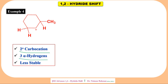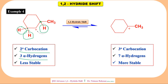Example four: this is a secondary carbocation with three alpha hydrogens — one alpha carbon has two hydrogens and the other has one. It is less stable. Hydride may be shifted from either alpha carbon, but always remember: shift from the carbon that gives the more stable carbocation. After the hydride shift we get a tertiary carbocation with seven alpha hydrogens — two on one carbon, two on another, and three on the third — which is more stable.